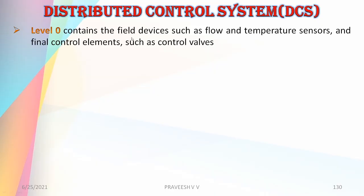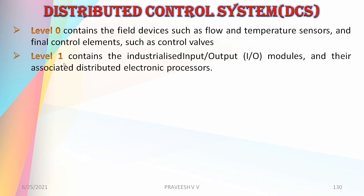Level 0 contains the field devices such as flow and temperature sensors, and final control elements such as control valves — mainly sensors and actuators at the field level.